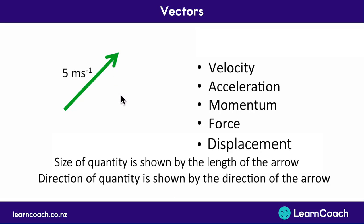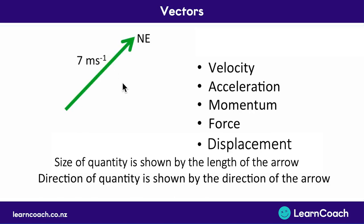For example, I could say I'm traveling at 5 meters per second in a northeast direction — that would be shown by this green arrow here. Whereas if I was going at 7 meters per second in the same direction, that would be a bigger arrow, but the direction would be exactly the same. That's because the size of the quantity is shown by the length of the arrow — a bigger size, a bigger arrow.